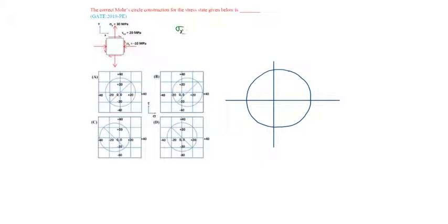Given sigma x is compressive, i.e., negative -10 megapascals, sigma y is 30 megapascals, and tau xy is 20 megapascals.